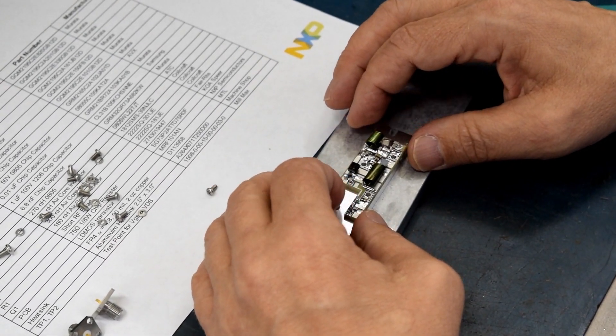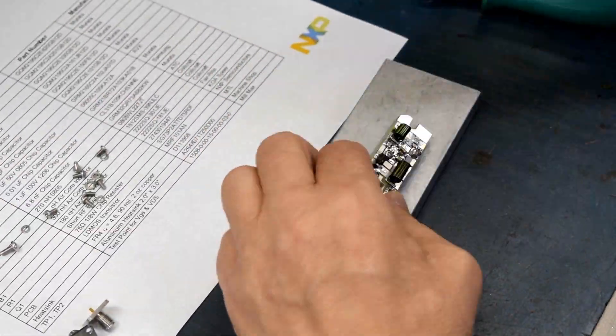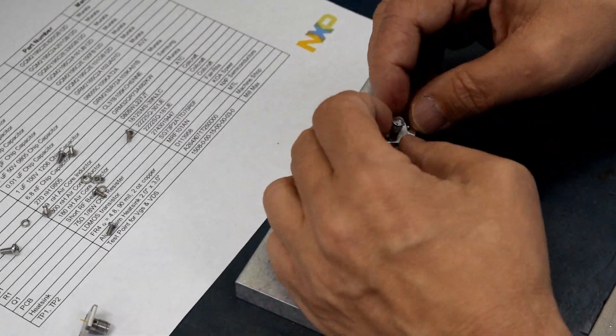The step now is to mount the printed circuit board, making sure that the surface is clean and using screws and washers on each of the three locations.